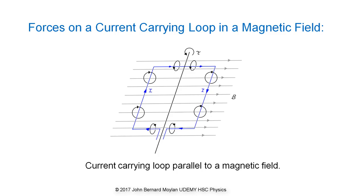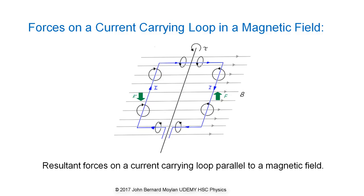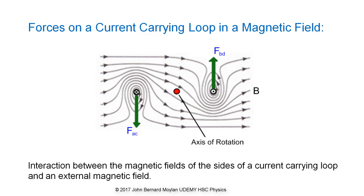Forces on a current carrying loop in a magnetic field. Imagine a rigid current carrying loop which is free to rotate about an axis as shown in a diagram. The forces shown in green acting on a current carrying loop shown in blue are the result of the interaction between the external magnetic field shown in gray and the magnetic fields due to the current in the loop.